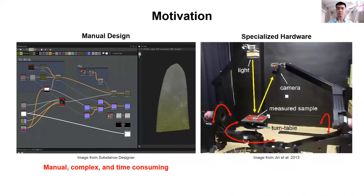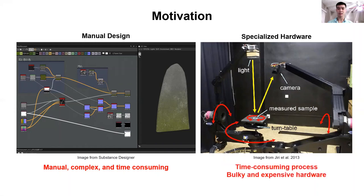Another option is to use specialized hardware, for example a Gonioreflectometer, to capture the material of a real-world object. This is done by measuring the appearance from different views and lighting positions. While these measurements are accurate, this process is time-consuming, and the hardware is bulky and expensive.